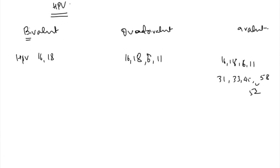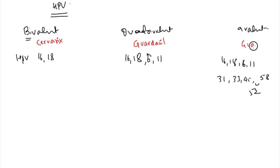The trade names: the bivalent vaccine is called Cervarix, the quadrivalent is Gardasil. A memory aid: a room with four corners has four guards - quadrivalent is Gardasil. The nine-valent is also called Gardasil 9.